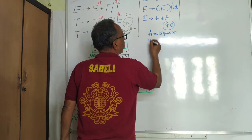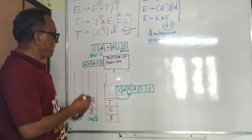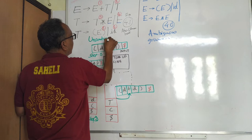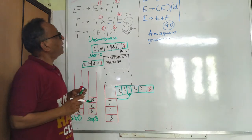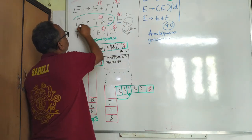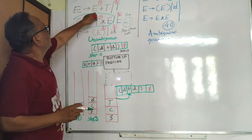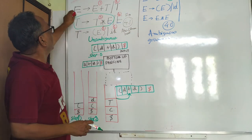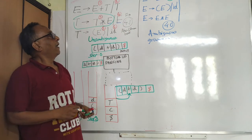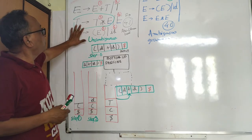This grammar is ambiguous because you can have two different priorities — sometimes plus is calculated first. The modified grammar is unambiguous. We have put T so that T will be calculated first. However, this grammar is not fit for LL(1) because of left recursion. That is why we incorporated E-dash and T-dash — instead of six rules we have two more rules, E-dash and T-dash — and then it is good enough for top-down LL(1) parsing.